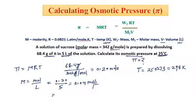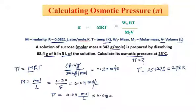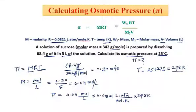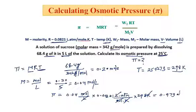Plugging in the values: π = 0.04 mol/L × 0.0821 L·atm/(mol·K) × 298 K. Kelvin cancels out, mole cancels out, and liter cancels out, leaving the unit ATM. Multiplying these three values gives π = 0.979 atm. This is the osmotic pressure of the sucrose solution at 25°C.